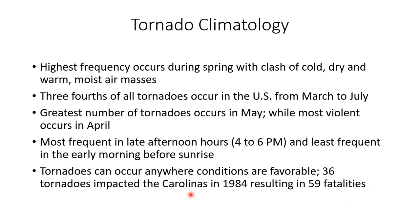Tornadoes can occur anywhere conditions are favorable. For example, 36 tornadoes impacted the Carolinas in 1984, resulting in 59 fatalities. Using the acronym SLIM: you need Shear — a change in wind direction and speed with height; Lift — favorable areas of lift in the upper, middle, and lower atmosphere; Instability — warm, moist air in the lower levels with colder air aloft; and Moisture — a lot of available moisture for storms to tap into.